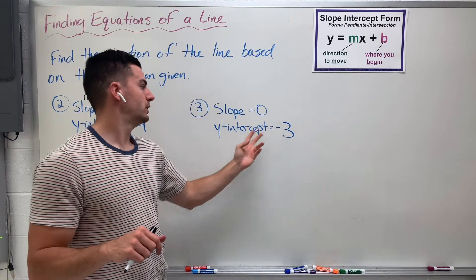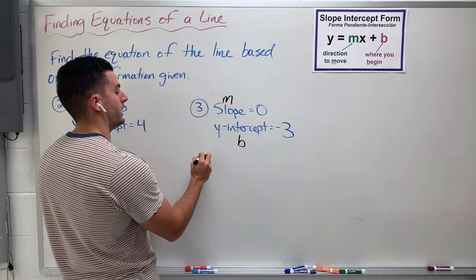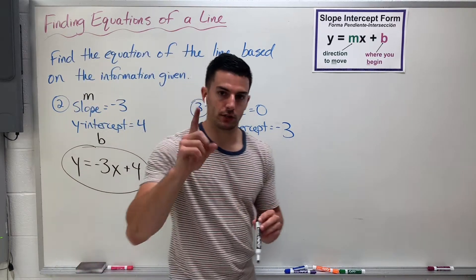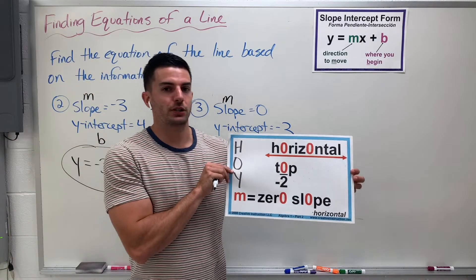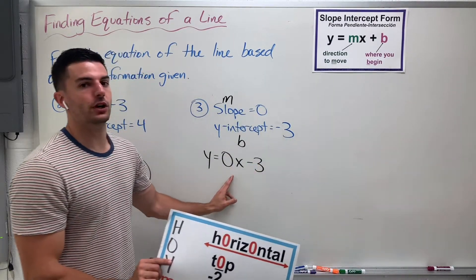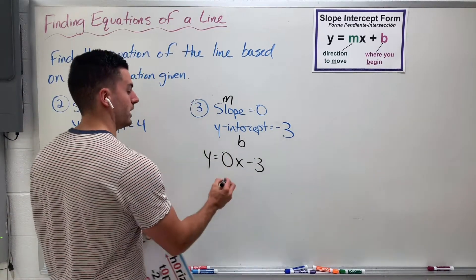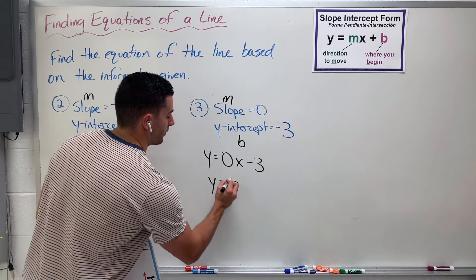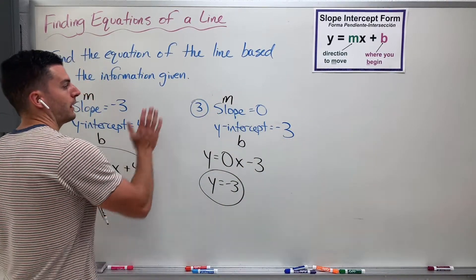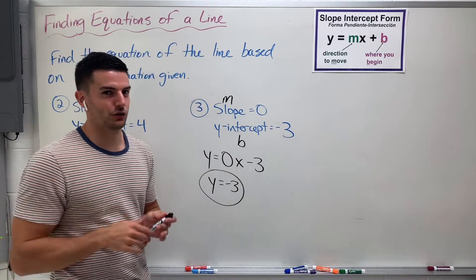Number 3: the slope is 0 and the y-intercept is negative 3. Same thing — slope is M, y-intercept is B. So you could say y equals 0x minus 3. But remember, horizontal lines are the ones that have a slope of 0. If the slope is 0, we don't usually write equations like that — we write it as y equals whatever the number is. So we just say y equals negative 3. That would be the real equation of this line: a horizontal one. Those are awesome problems because they give you all the information you need right away.